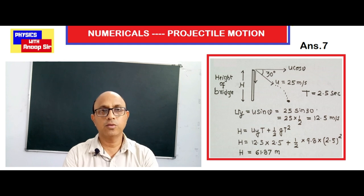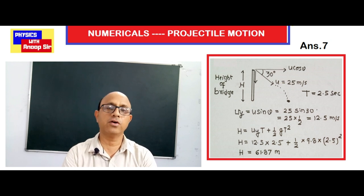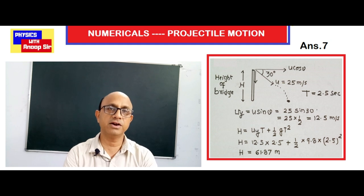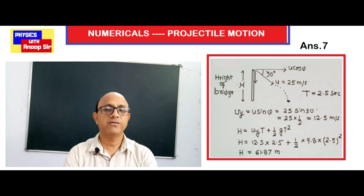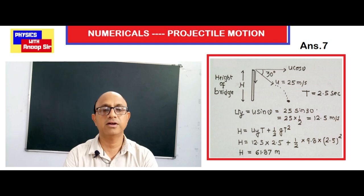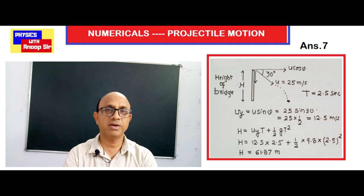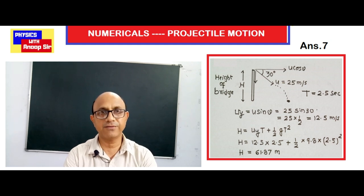In the next question, a stone is thrown from a bridge of certain height h, making an angle of 30 degrees downward from the horizontal with a velocity of 25 meter per second. As you can see in the diagram, the velocity component is directed downward at 30 degrees below horizontal. The stone follows a parabolic curve downward and hits the water, taking 2.5 seconds.